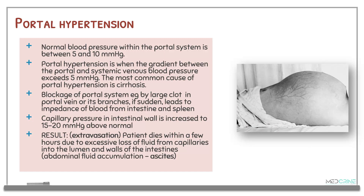Another common condition is portal hypertension. Normally, blood pressure within the portal system is between 5 to 10 mmHg, and portal hypertension is defined as a gradient between the portal and systemic blood pressure exceeding 5 mmHg. The most common cause of portal hypertension is liver cirrhosis. Blockade of the portal system — either by a large clot in the portal vein or its branches — if sudden, leads to impedance of blood flow from the intestine and spleen. Capillary resistance in the intestinal wall increases to about 15 to 20 mmHg above the normal values, resulting in extravasation. The patient may die in a few hours due to excessive loss of fluid from capillaries into the lumen and walls of the intestines, leading to development of ascites.